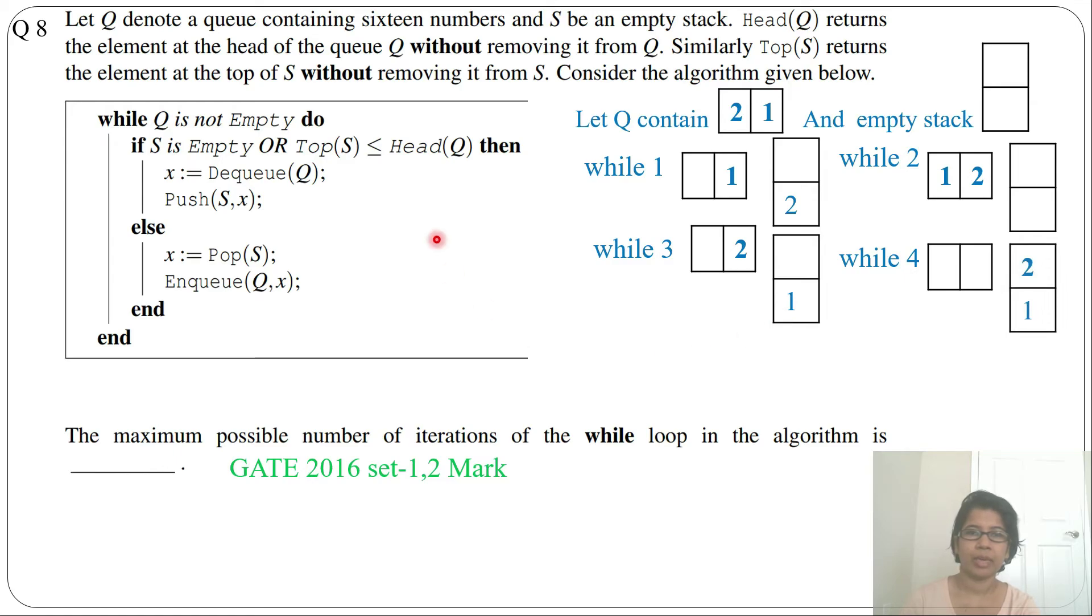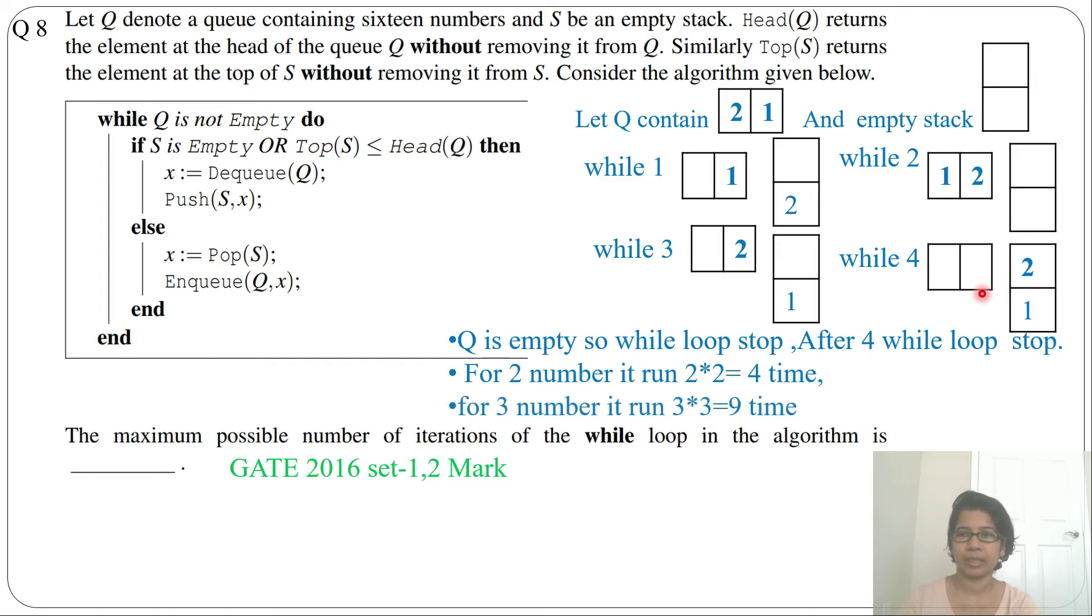And next time while loop, it will check while queue is not empty. But here now queue is empty so it will stop. So as queue is empty, the while loop will stop. And after how many while? So it is just 4 while. So for 2 it is 2 multiplied by 2, which is 4. And for 3 it will be 3 multiplied by 3, which is 9. So if you have doubt you can check with 3 numbers.